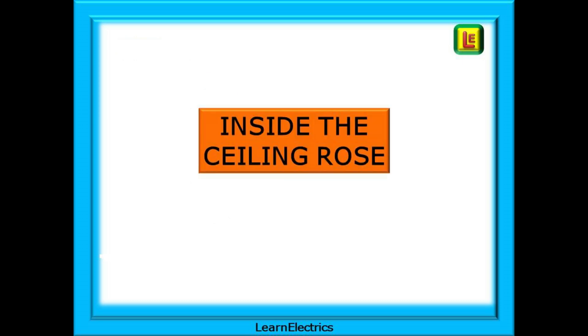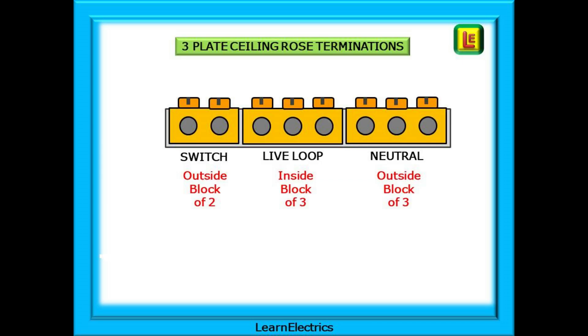First, let's take a look inside a standard ceiling rose. In a three-plate ceiling rose, you will find a row of brass terminal blocks, plus an earth block. The terminal blocks are made up of one block of two terminations and two blocks of three terminations.